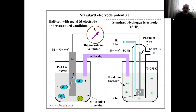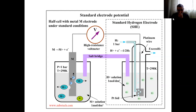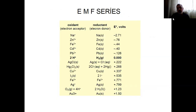When we look at aluminum, it's very active. Sodium, lithium — these metals are very active. Now we are going to look at these metals. There is an EMF series, and this EMF series is based on hydrogen voltage — hydrogen reduction or hydrogen oxidation.